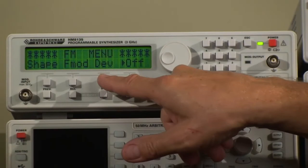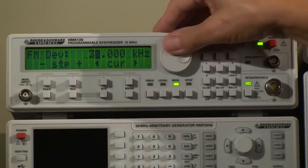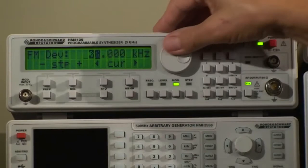Go back one step, and you can set the deviation. Now set to 20 kilohertz. Take a standard deviation of an FM station—75 is the nominal. And that's it. So this was the Hameg 8135, and you just saw how easy it is to use.